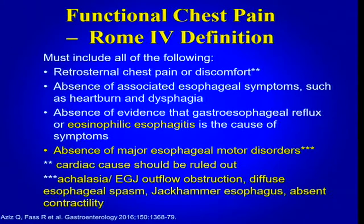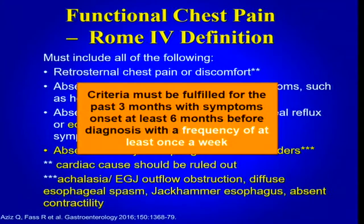The Rome definition of functional chest pain is: retrosternal chest pain or discomfort; absence of associated esophageal symptoms such as heartburn and/or dysphagia; absence of evidence that GERD or eosinophilic esophagitis is the cause; absence of major esophageal motor disorders; and cardiac cause should be ruled out. These criteria must be fulfilled for the past three months, with symptom onset at least six months before diagnosis.